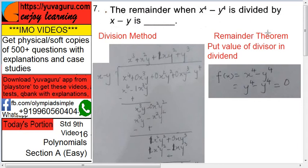Remainder theorem means this is the divisor and this is the dividend. Put the value of divisor in the dividend and the answer you get is the remainder. So x minus y, put x equals to y. Put it in x raised to 4 minus y raised to 4, you get y raised to 4 minus y raised to 4, which is 0.